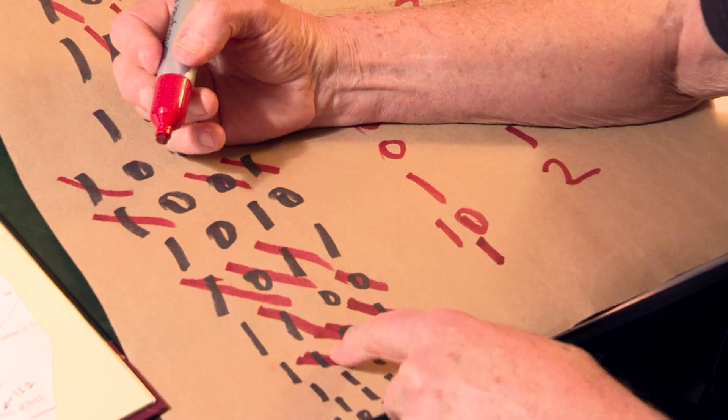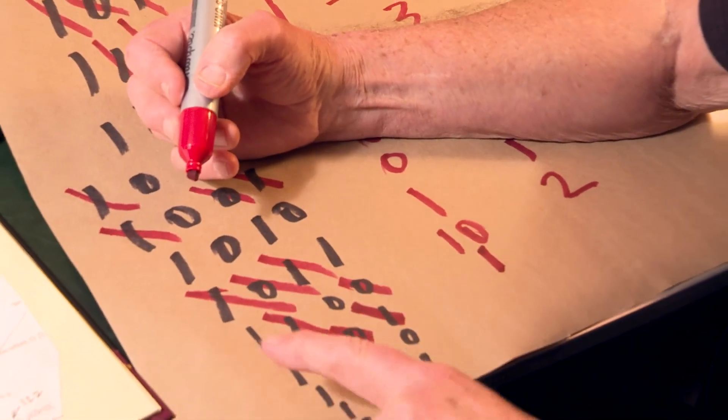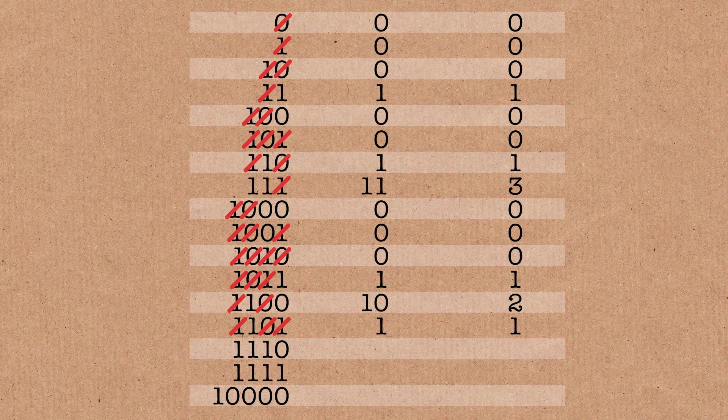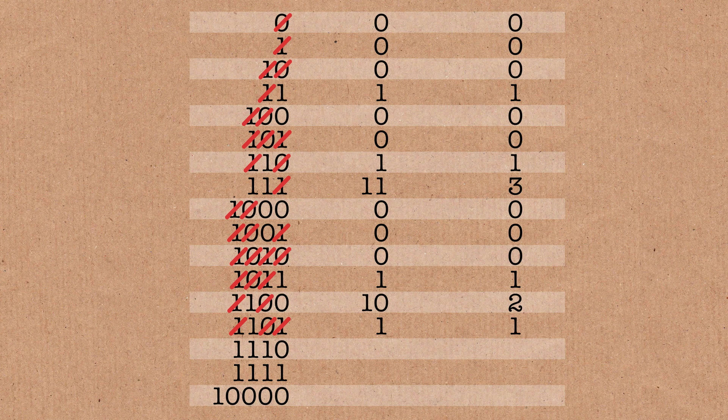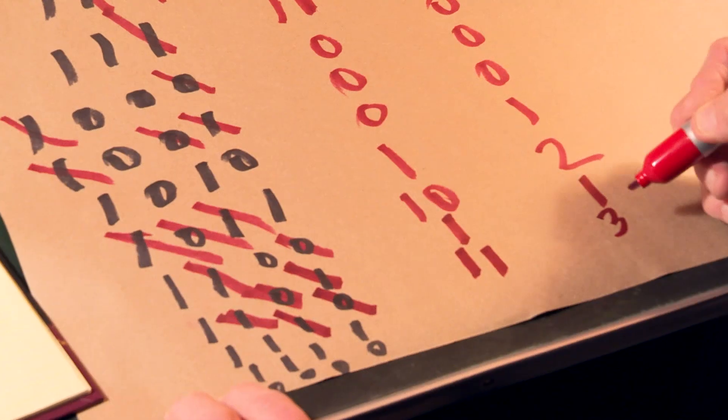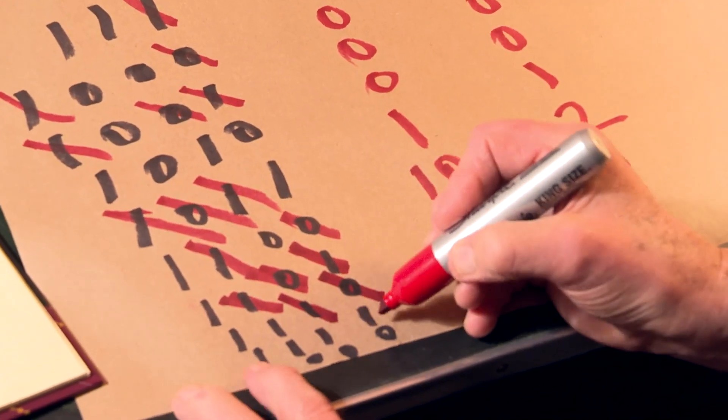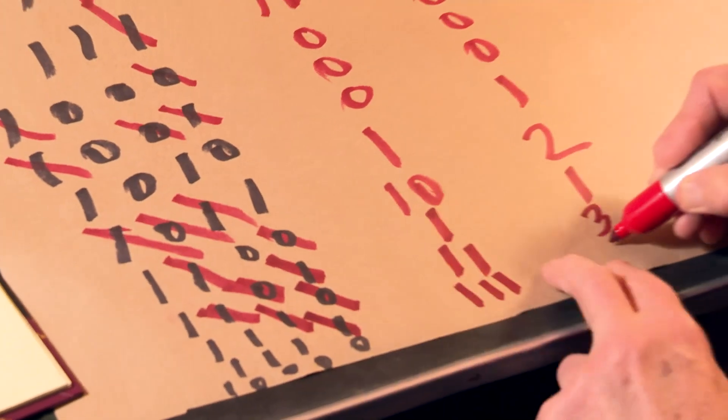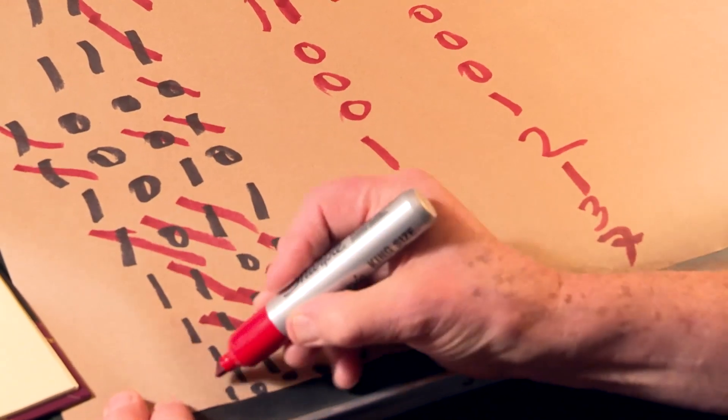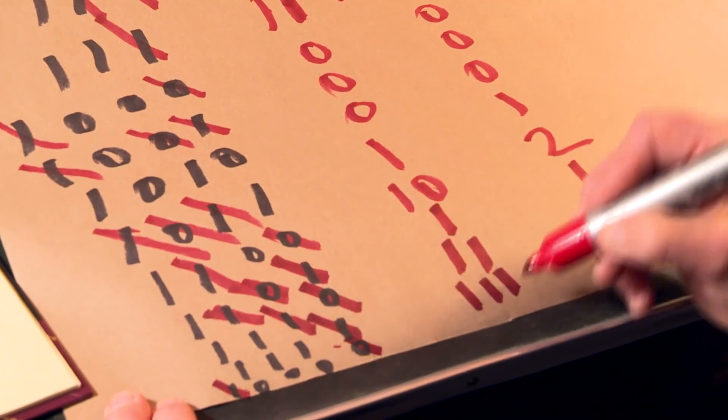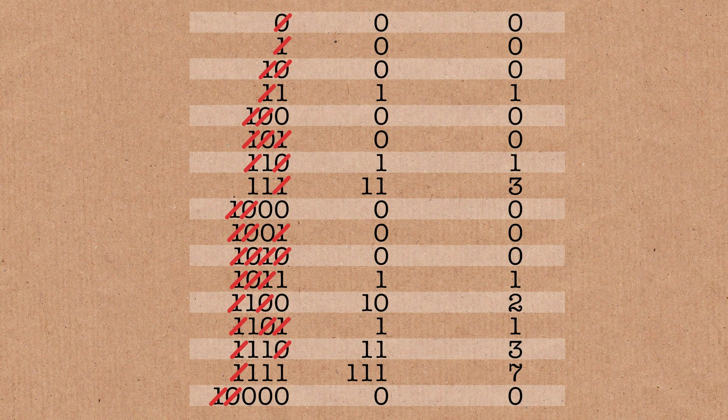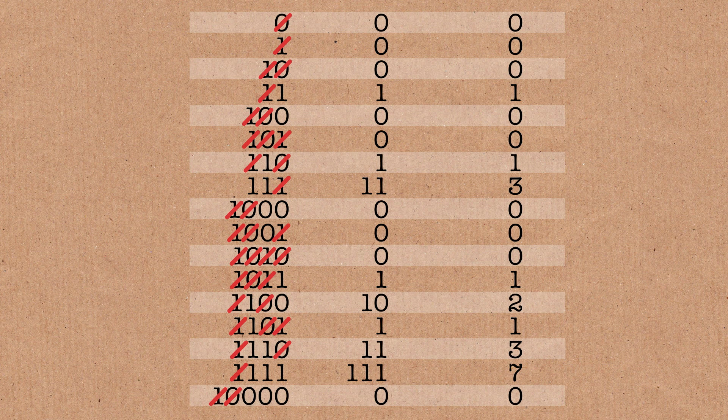Thirteen, which is one, one, zero, one. We lose the one, the zero and one of the ones and all we are left with is a one. When we get to fourteen, we lose a zero and a one and we're left with one, one, which is three. And one, one, one, one, which is fifteen. We lose a one, we get one, one, one and we get seven. And when we get down to sixteen, we get zero. Again. So that's, and we keep going forever. So this is the planed-down version.